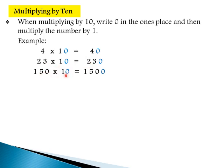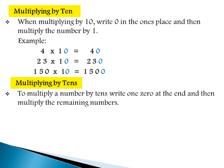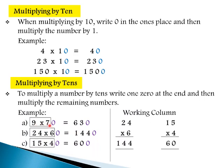In the same way, 23 times 10 equals 230, and 150 times 10 equals 1500. Next, multiplying by tens — that is, multiplying by multiples of 10 like 20, 30, 40, 50, 60, 70, 80, 90. To multiply a number by tens, write one 0 at the end and then multiply the remaining numbers. Example: 9 times 70 — first multiply 9 times 7 equals 63, then put a zero at the end, so the answer is 630. In the same way, 24 times 60: first multiply 24 times 6 equals 144, put a zero at the end, so the answer is 1440. And 15 times 40: first multiply 15 times 4 equals 60, put a 0 at the end, so the answer equals 600.